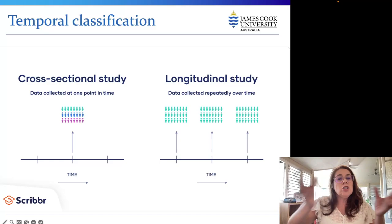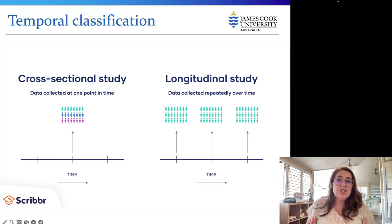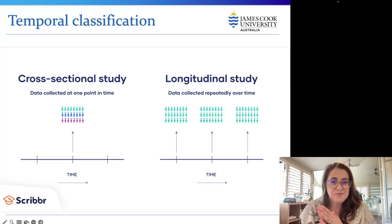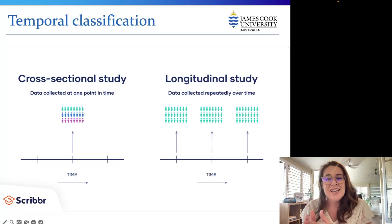A longitudinal study is when respondents are questioned at different points in time to see what changes have occurred. Longitudinal studies involving two or more samples at different times are called cohort studies, because similar people are expected to be in each sample over time. These can also be called tracking studies because they compare aggregated trends and identify changes. Having different sample groups avoids response bias from prior interviews, but the researcher can never be sure that changes aren't due to having different people in the sample.